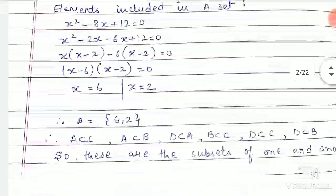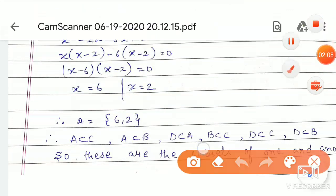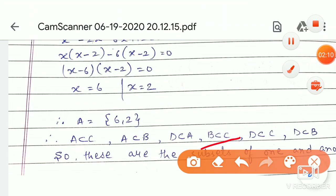subset of C, which is correct. A is a subset of C, A is a subset of B, D is a subset of A, D is a subset of C, D is a subset of B, and B is a subset of C. So, 6 pairs total.